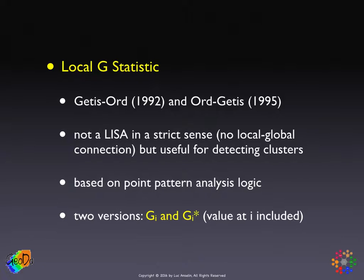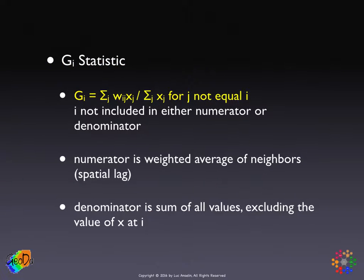Let's look at the GI statistic first. The form of the statistic is a very simple ratio: for each location, the spatial lag — in essence, the sum over J of W_IJ X_J — divided by the sum over J for all values in the system except the value at I. So the value at the location itself is not included in either numerator or denominator, unlike the local Moran's I.